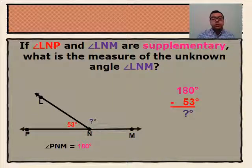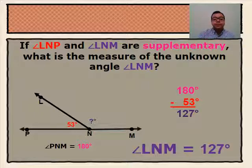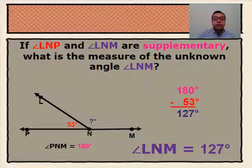So we took our total 180 degrees, subtracted our known angle, 53 degrees, and got a total of 127 degrees. So our angle LNM is 127 degrees.